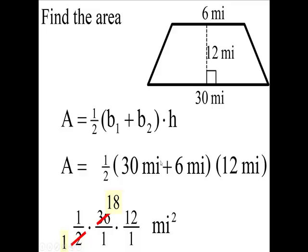The average of the two bases - if 36 divided by 2 is 18 - 18 is the average of the two bases. That times my height will be 216 square miles.